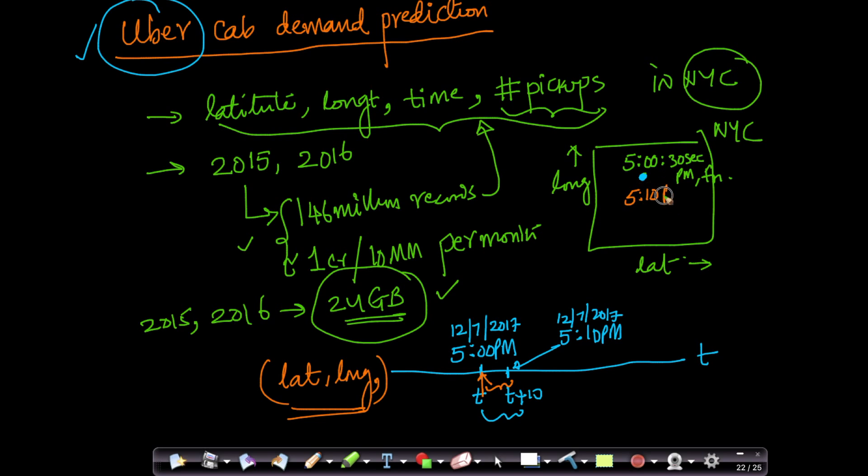So if I can predict 10 minutes in advance how many cabs will be needed at every given location in New York City, that adds so much value. Because I can improve my customer experience. Even drivers, cab drivers are very happy because I can route my cab drivers to specific locations where I think there is a high demand or high requirement of drivers.